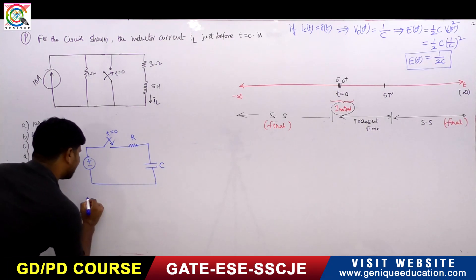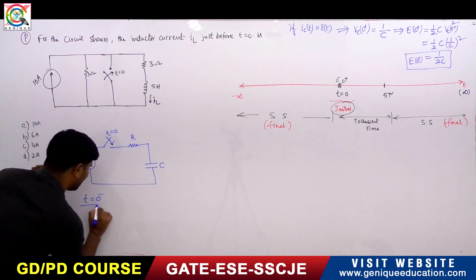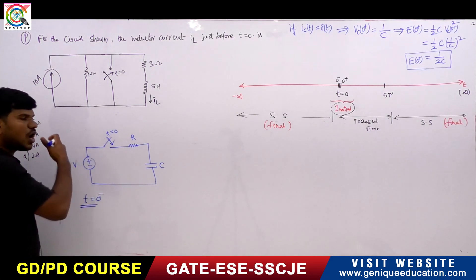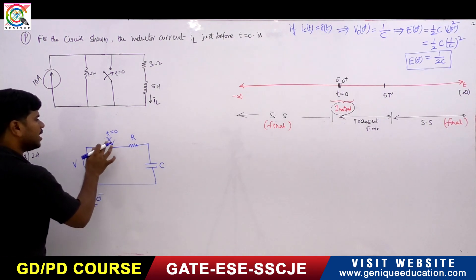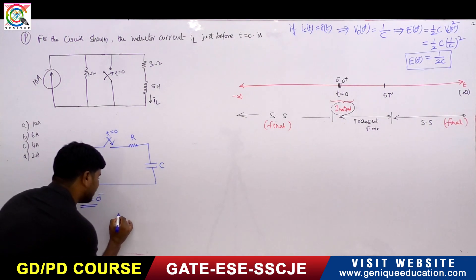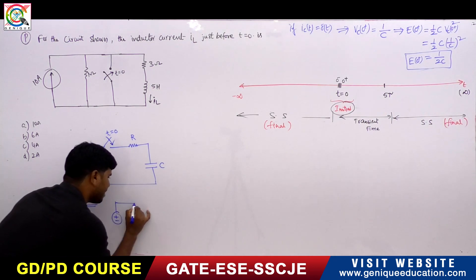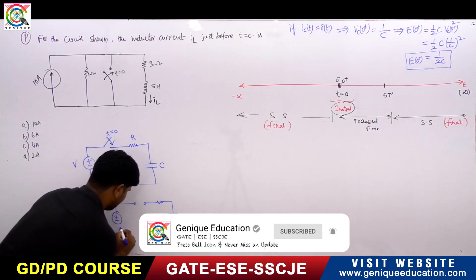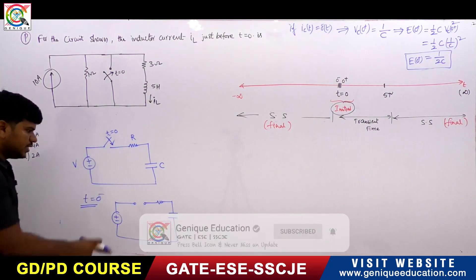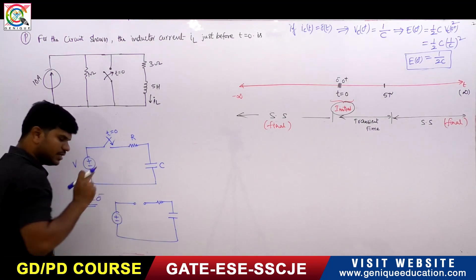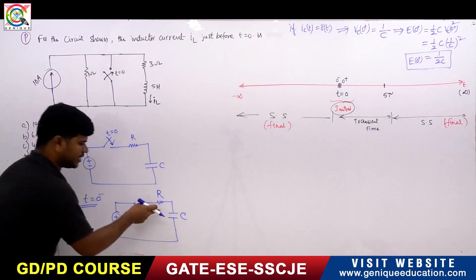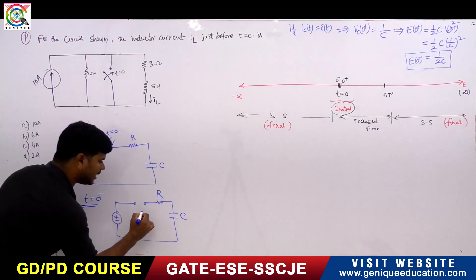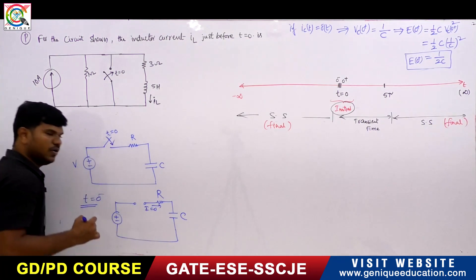This is the capacitor. At T equals 0 minus, the switch was not closed. That means the circuit will be looking like this — open circuit with R and capacitor. There is no current in this circuit.